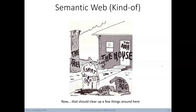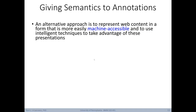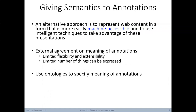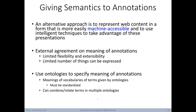The goal is to add a universal set of computer-readable tags or annotations to text or other objects, automatically making them computer-accessible and understandable. An alternative approach is to represent web content in a form that's more easily machine-accessible and to use intelligent techniques to take advantage of these representations. This requires an agreed-upon set of annotations used universally, which brings challenges in flexibility and extensibility. The annotations used by semantic webs can come from ontologies, which usually already have a standardized set of terms with associated meanings. Given that the semantic web includes many areas, it will be necessary to combine or relate terms across multiple ontologies.